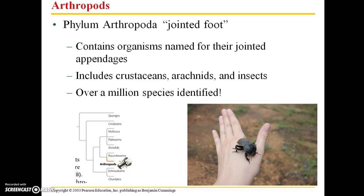Phylum Arthropoda literally means jointed foot. It contains organisms named for their jointed appendages and it's a very large grouping that includes crustaceans such as crabs and lobsters, arachnids which are the eight-legged arthropods such as ticks, spiders, and mites, as well as insects. Over a million species have been identified.